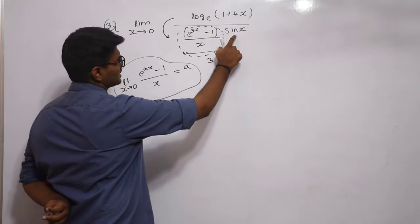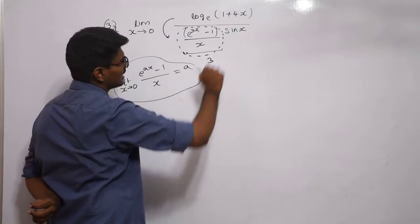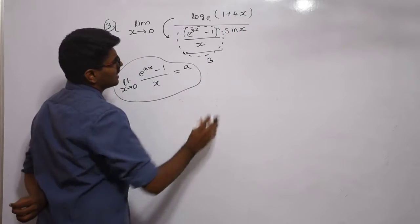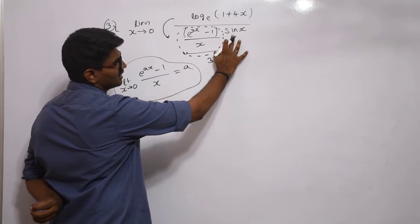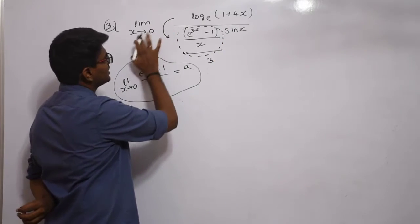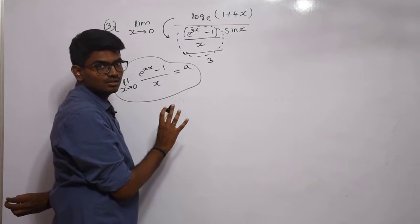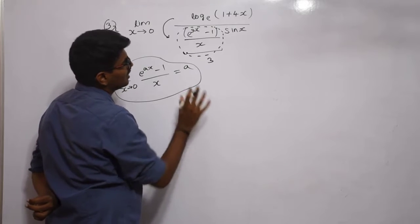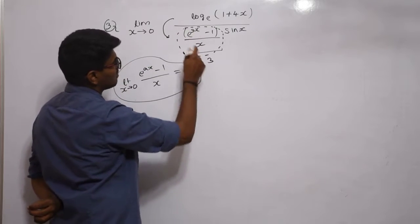Now, what am I going to do? There is sin(x), and we already discussed a standard case involving sin(x). What is that? sin(x)/x when limit x tends to 0 equals 1. What I could do is multiply and divide by x.